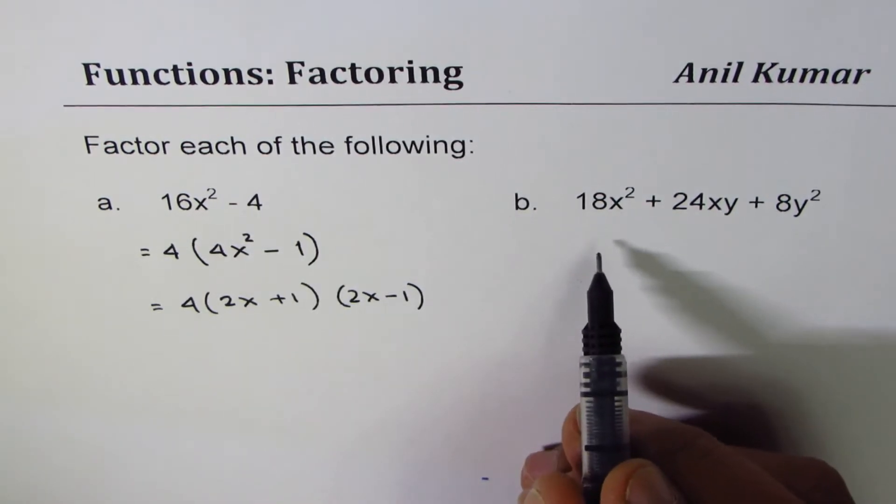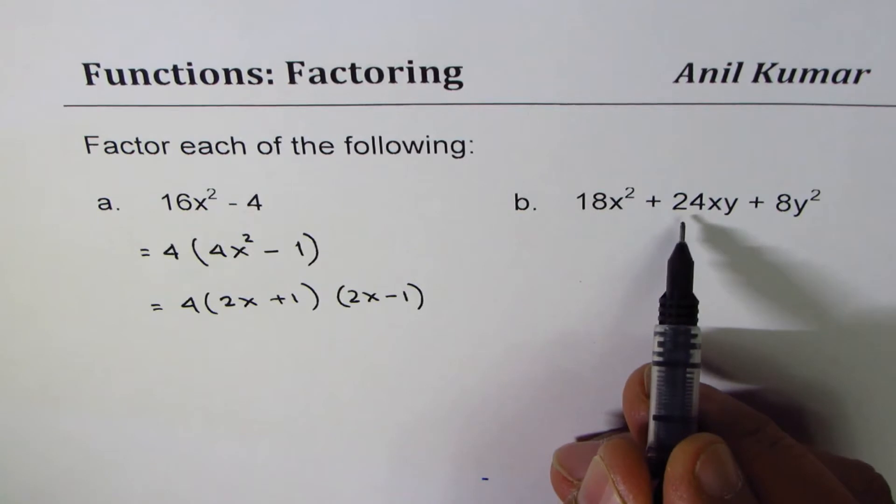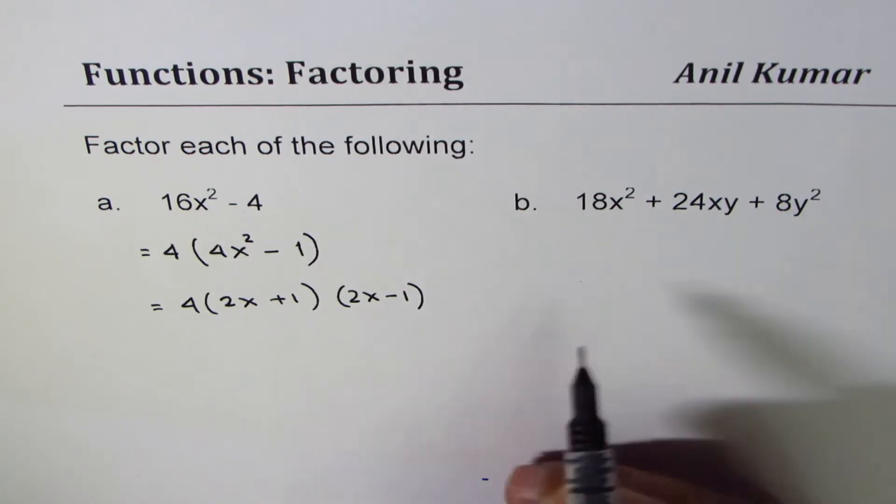Now let's do b. We have 18x² + 24xy + 8y².